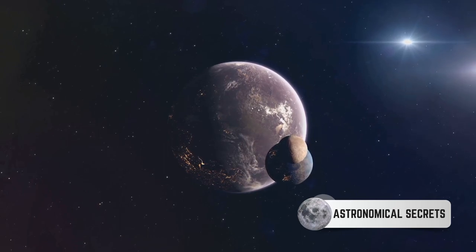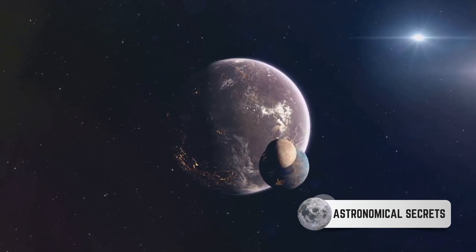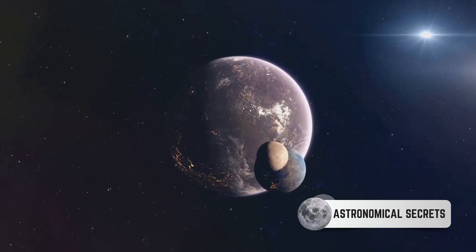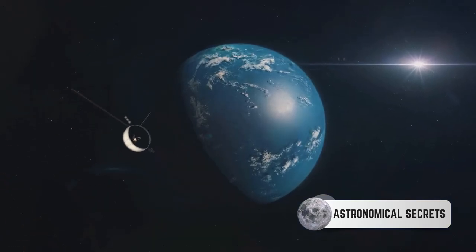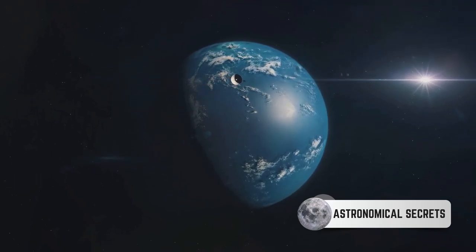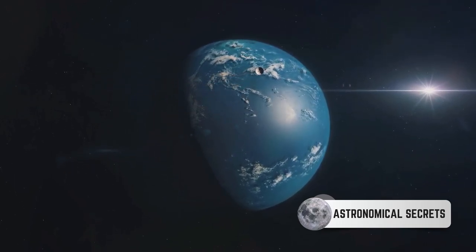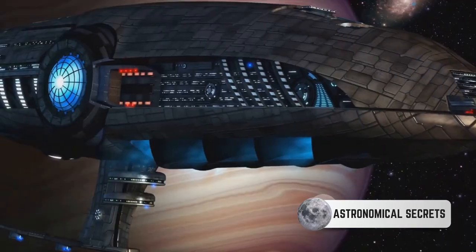Lastly, we have TRAPPIST-1e, part of a system of seven Earth-sized planets around the star TRAPPIST-1. Three of these planets are in the habitable zone, with TRAPPIST-1e being the most similar to Earth in terms of size, density, and the amount of radiation it receives from its star.